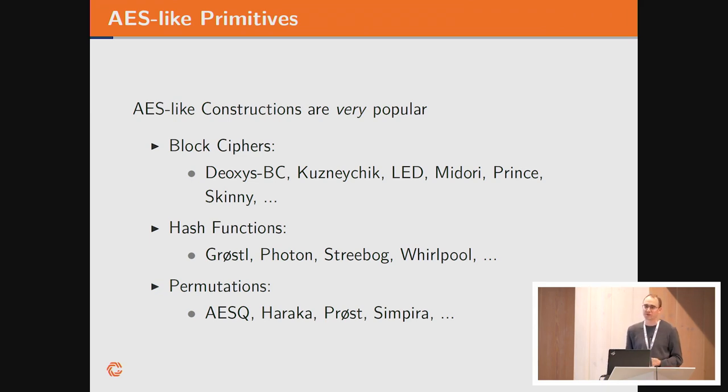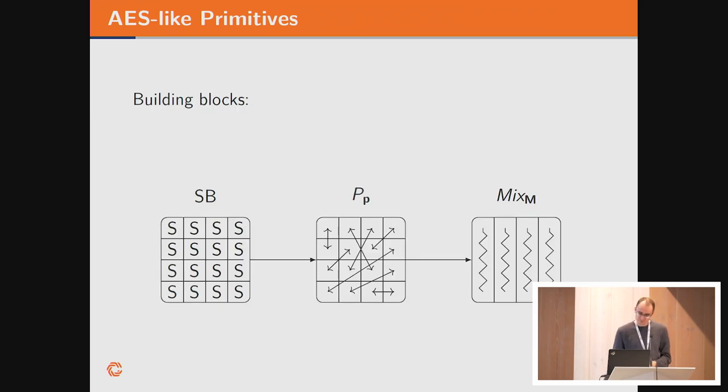For all the competitions we had, in SHA-3 we had a lot of AES-like designs, and probably also with the lightweight competition we will have many AES-like designs. What we mean with AES-like designs: we consider the following building blocks. We have a round function consisting of three sub-functions: first the application of an S-box, then a permutation which changes the position of elements in the state, and finally a matrix is multiplied on each column. A lot of designs fall into this category.